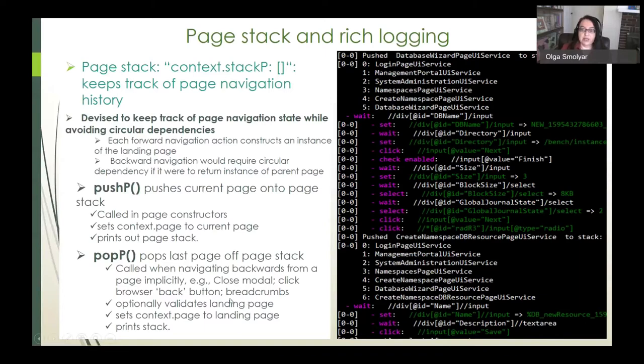This can also optionally validate that we've landed back on the parent page, and sets context.page to the correct page. It also prints the stack. So on the right here we have a snippet of our console output showing the custom commands logging that logs the action and selector for each interaction or wait command and the page stack on each navigation. Taken together these provide a great snapshot of what the test was doing if an error occurs during development or troubleshooting.